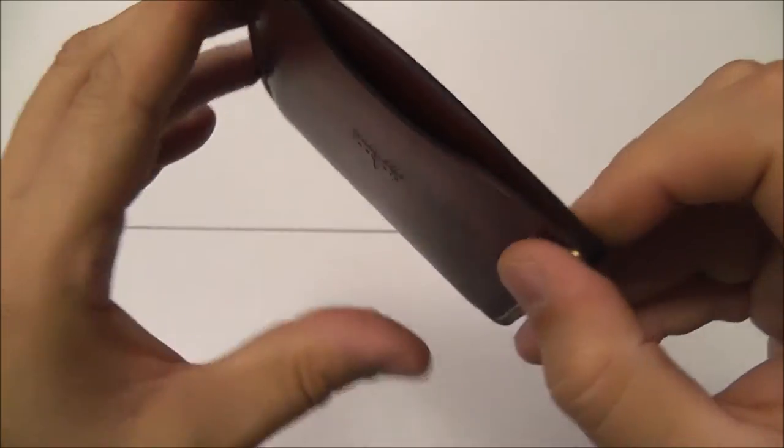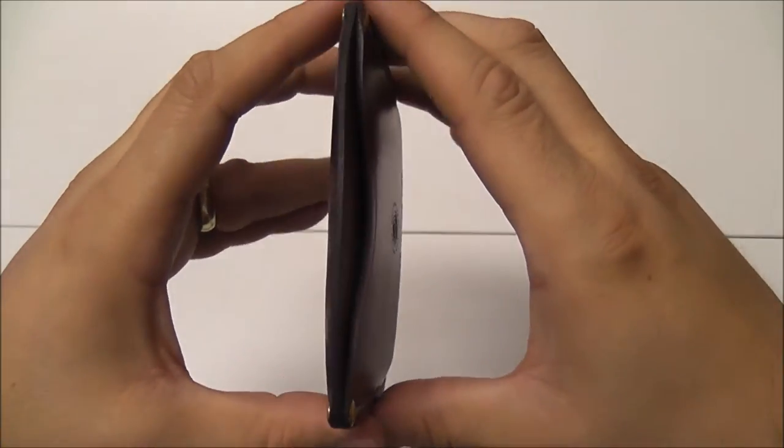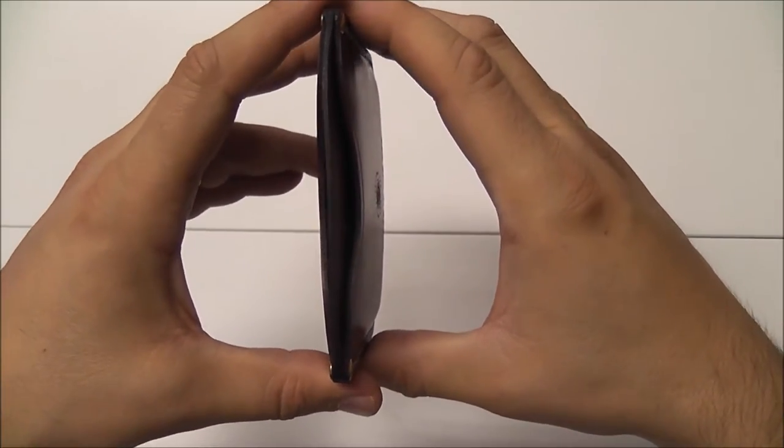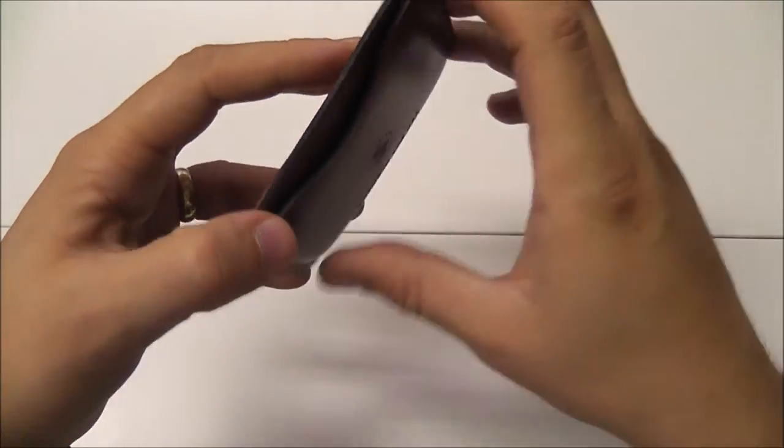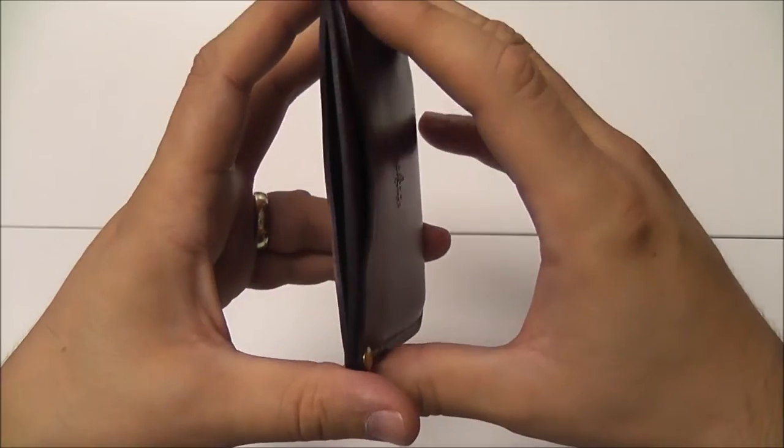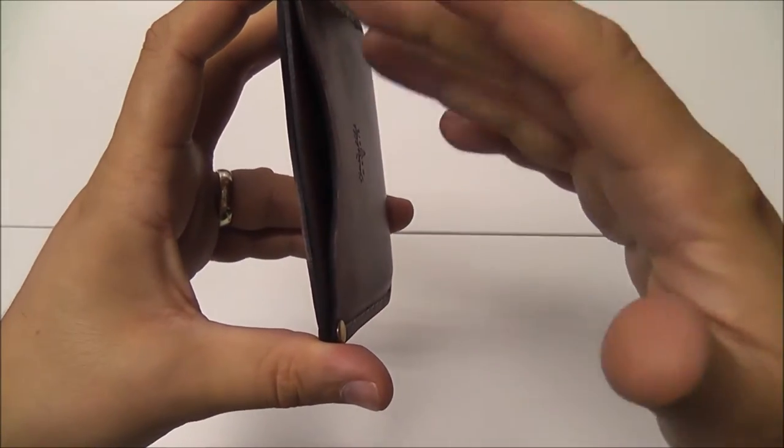The slim wallet sports only two pockets and this is the perfect design to keep its shape minimalist and make it barely noticeable when you wear it in your jeans. Each one of these pockets can easily hold five to six bills or three to four cards.